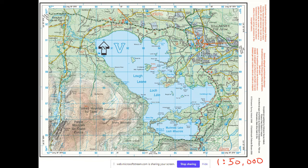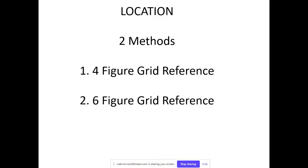If we want to give the location of a box, or maybe a specific point like that caravan park, there are two methods. One is called a four-figure grid reference, and the other is called a six-figure grid reference. The four-figure grid reference gives you the location of one box on the map, and the six-figure grid reference gives you the location of one exact point on the map.